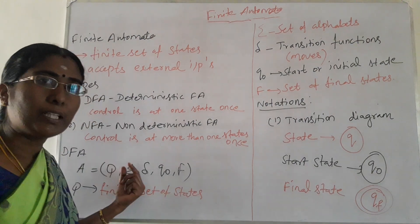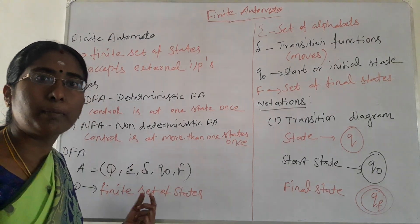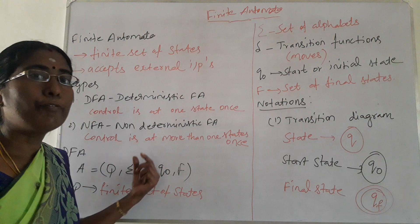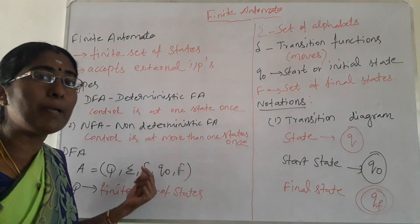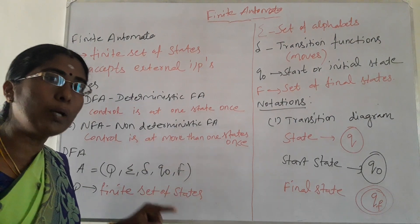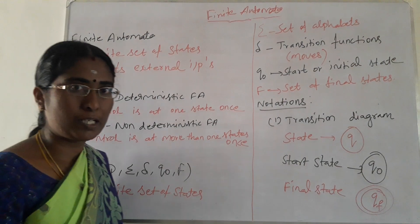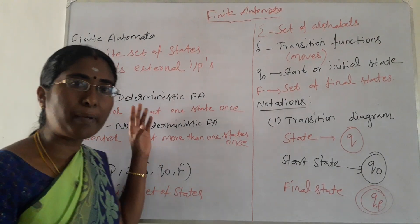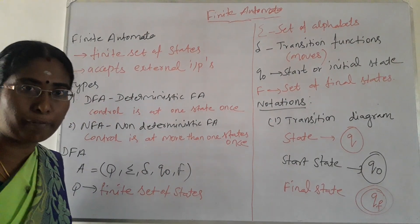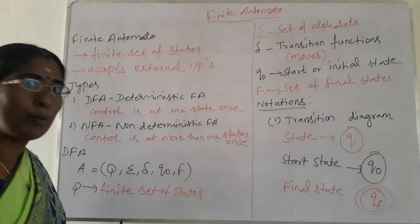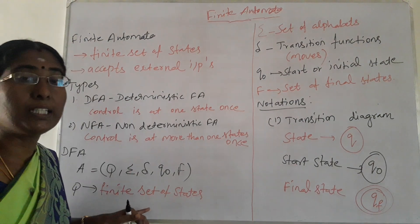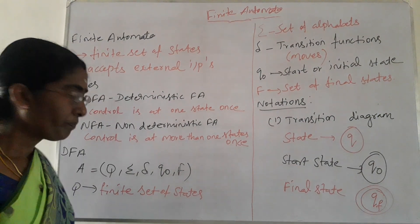But in NFA — non-deterministic finite automata — for each and every input symbol, it can have 0, 1, or more number of transitions. That is the major difference between DFA and NFA. Today we will discuss about the formal definitions of the deterministic finite automata.